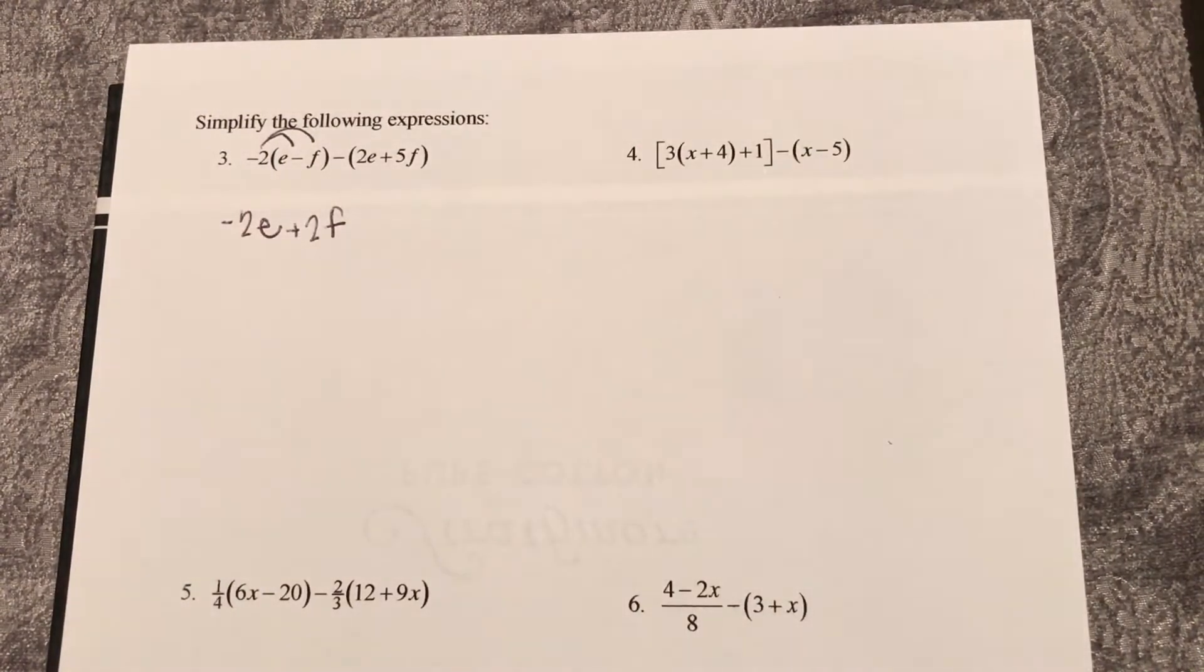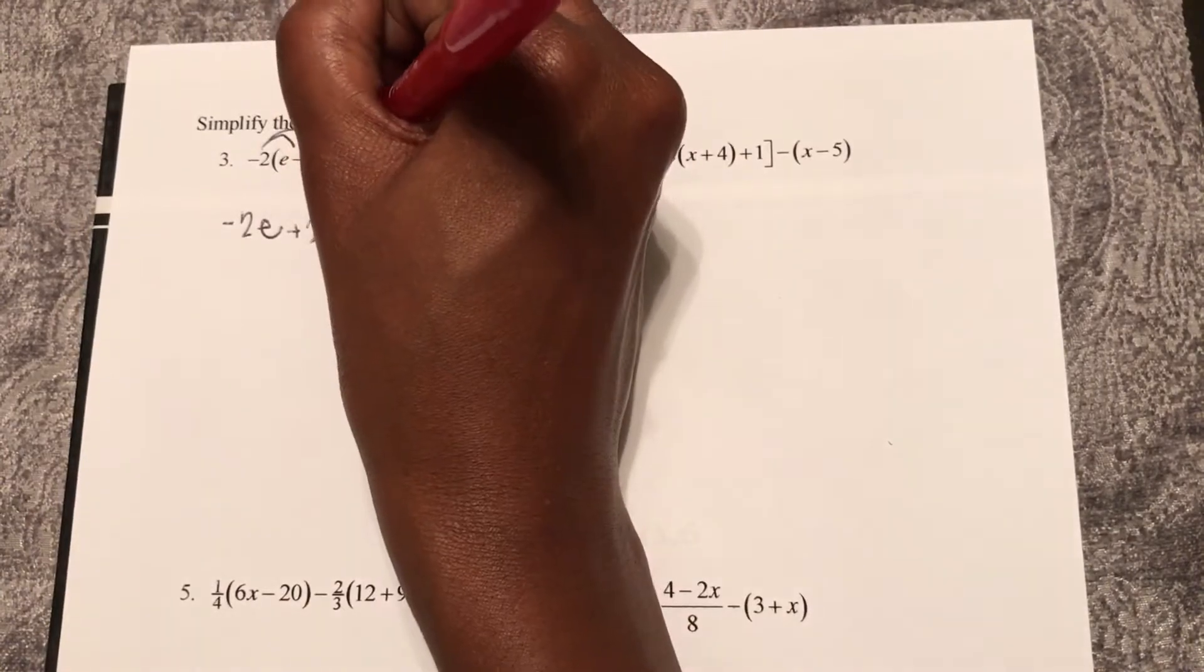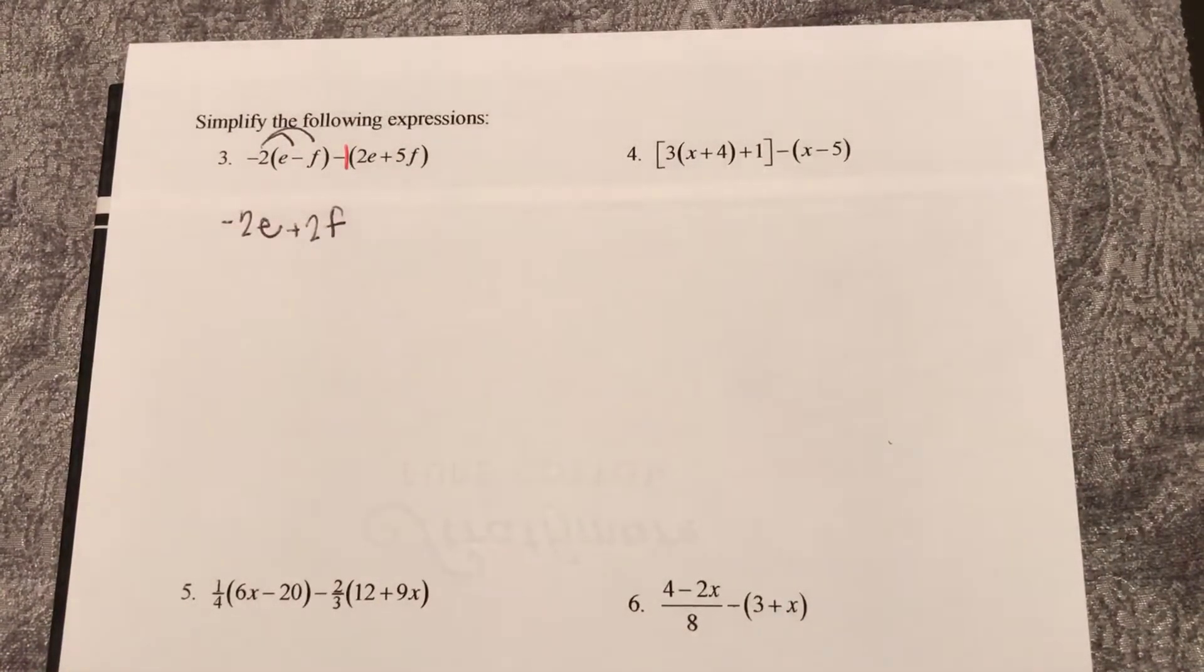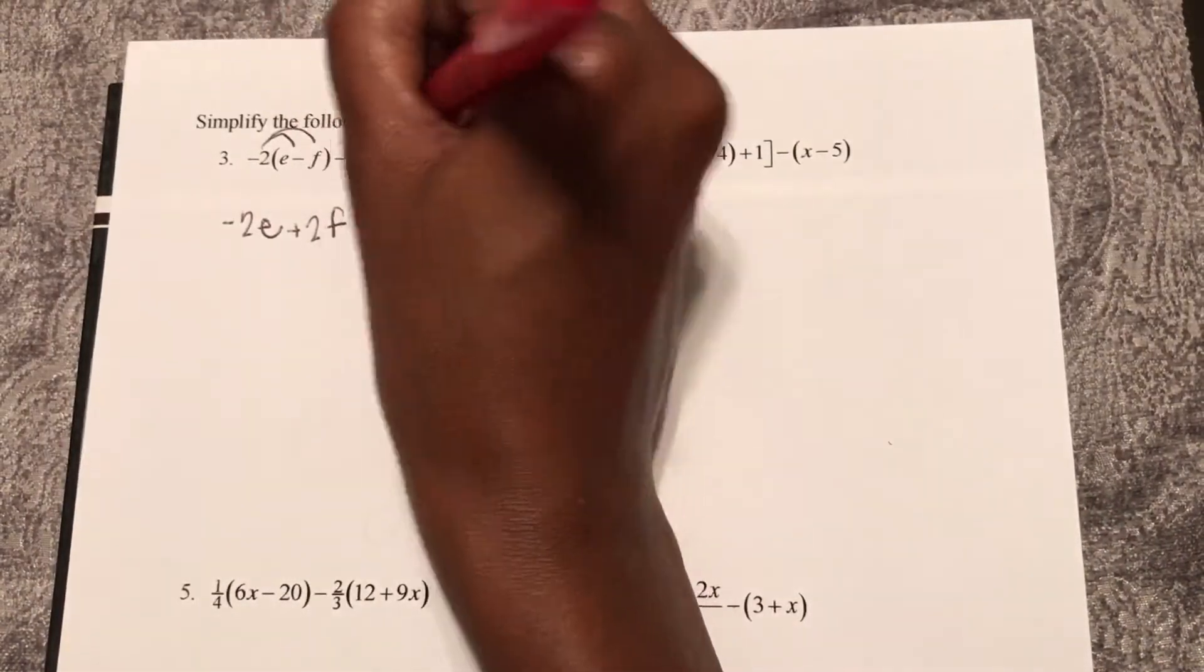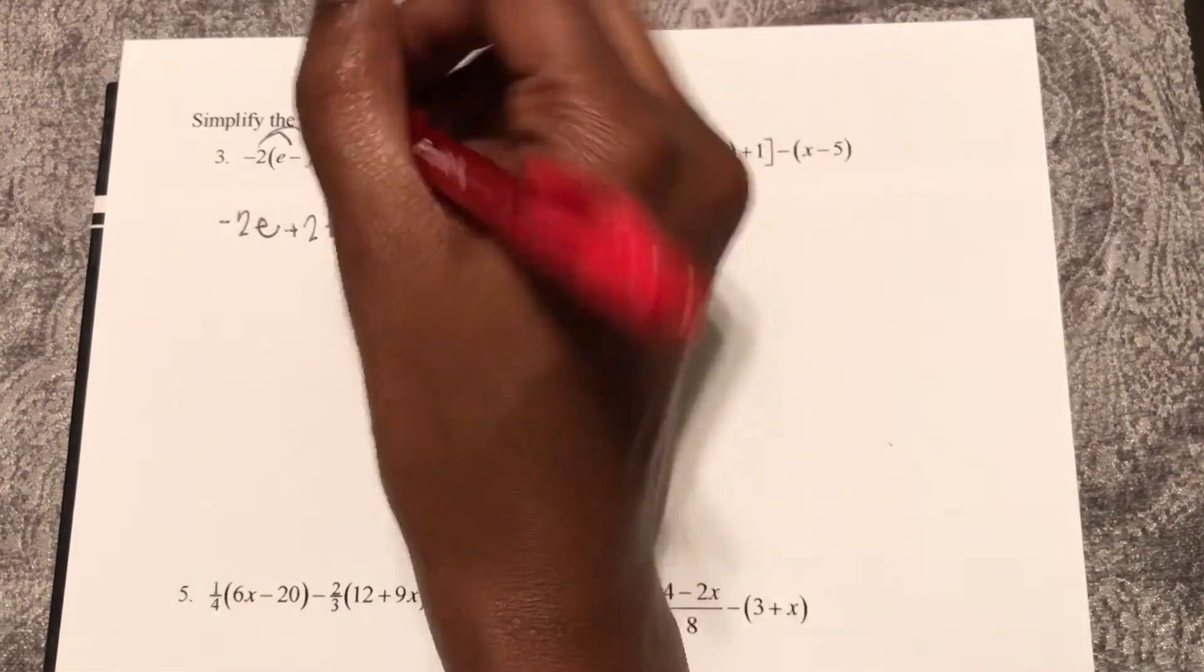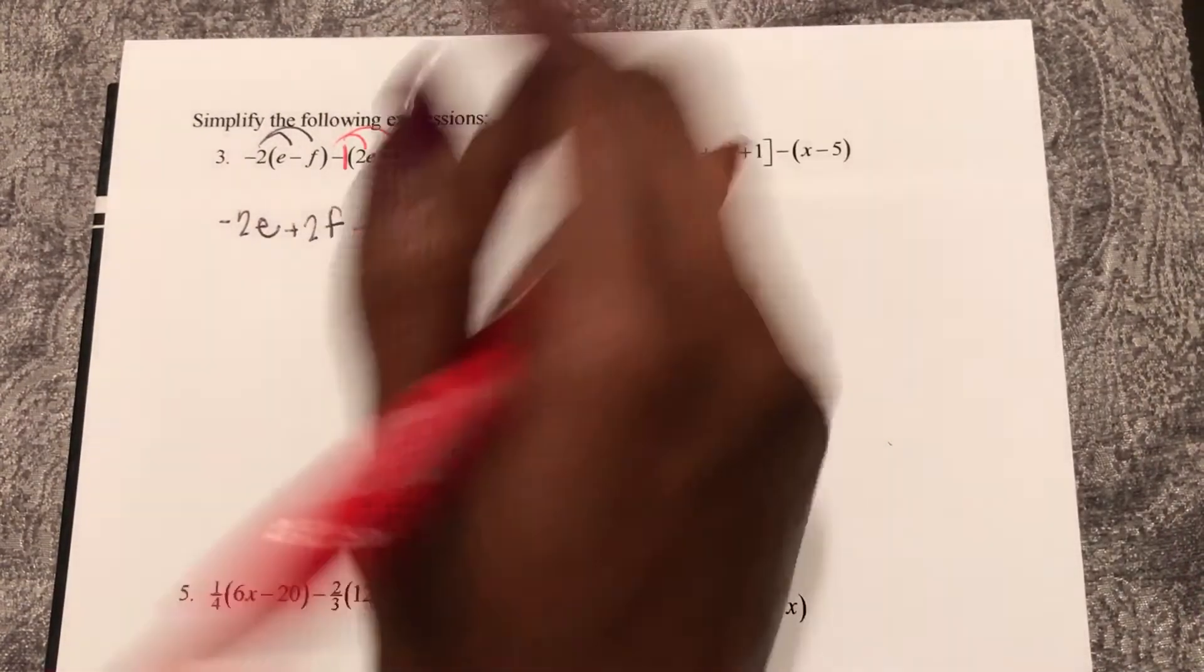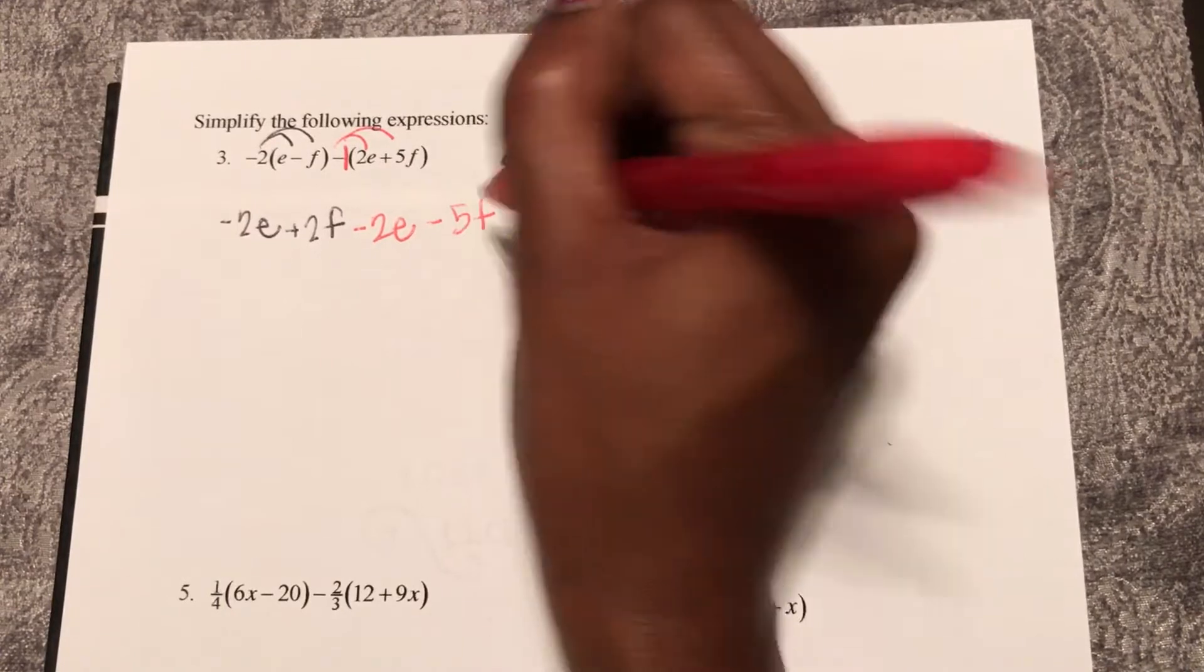Now here in the second parentheses, this is a negative, but remember that coefficient in front is actually a 1. So now I'm going to distribute this negative 1 into the parentheses, and negative 1 multiplied by 2e is negative 2e. Negative 1 multiplied by 5f is negative 5f.